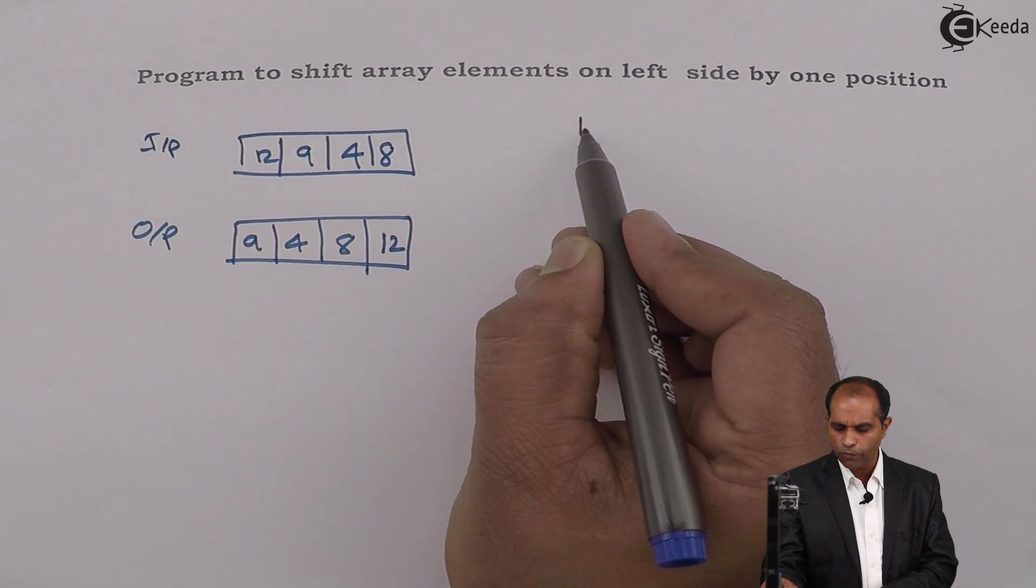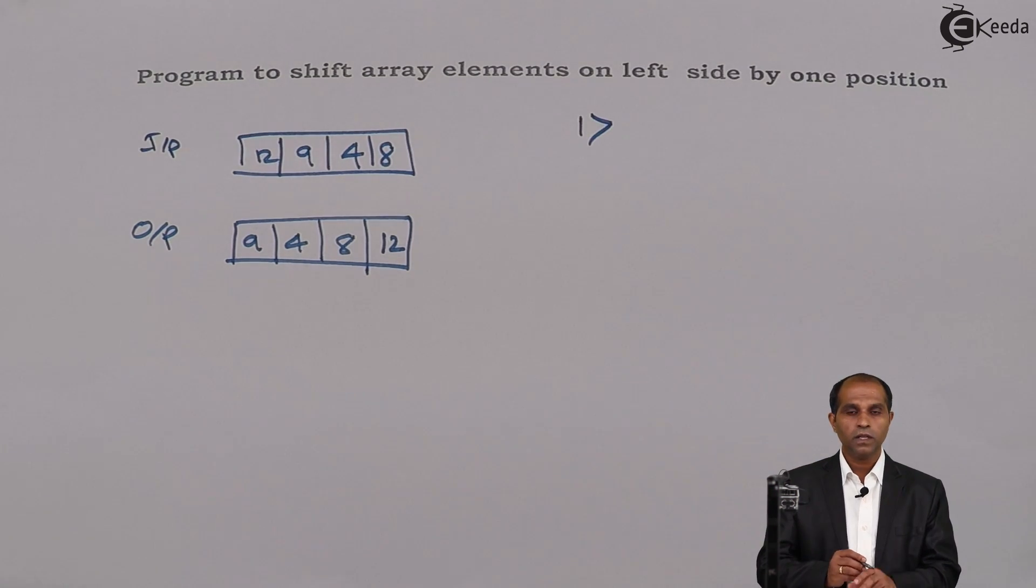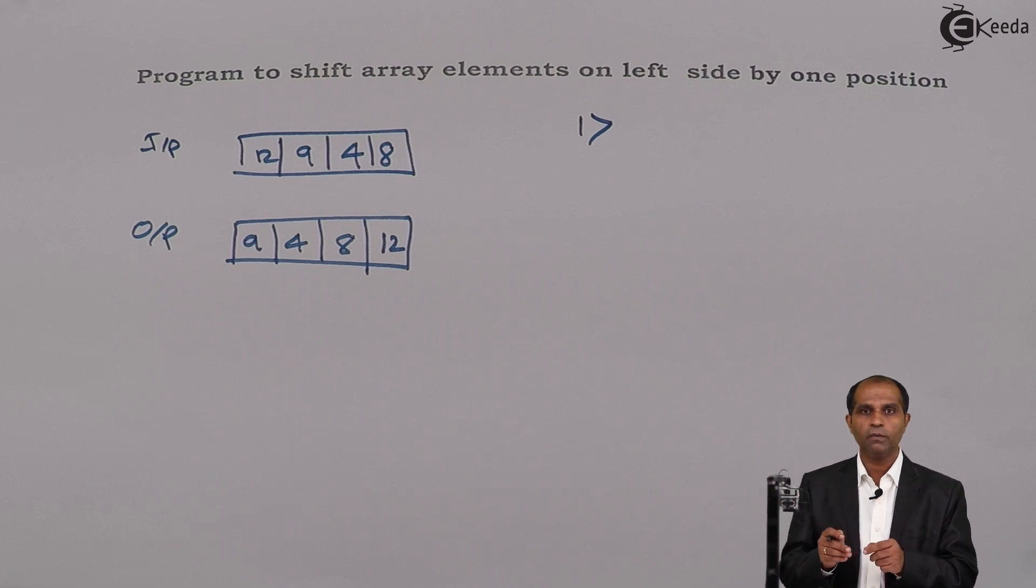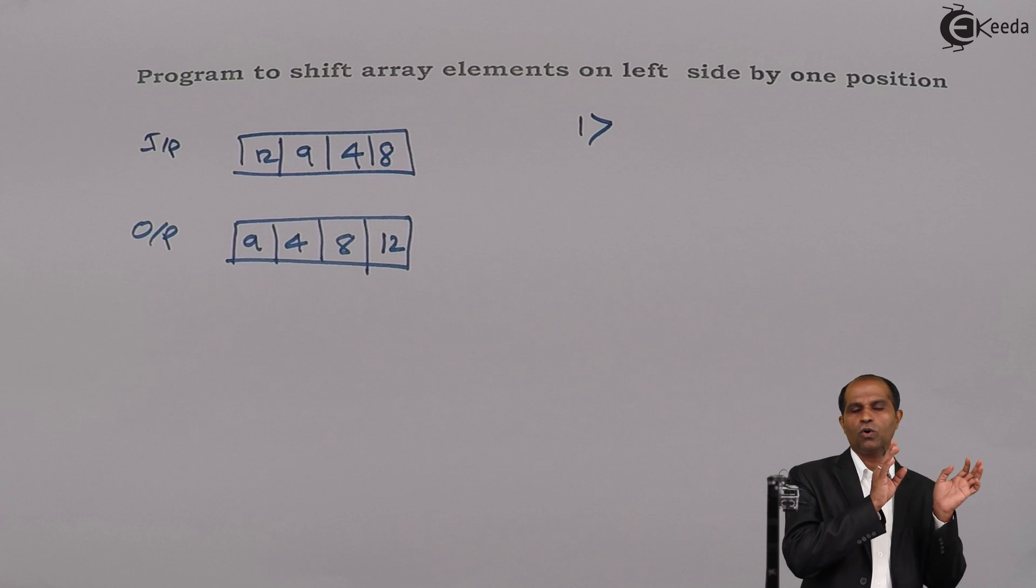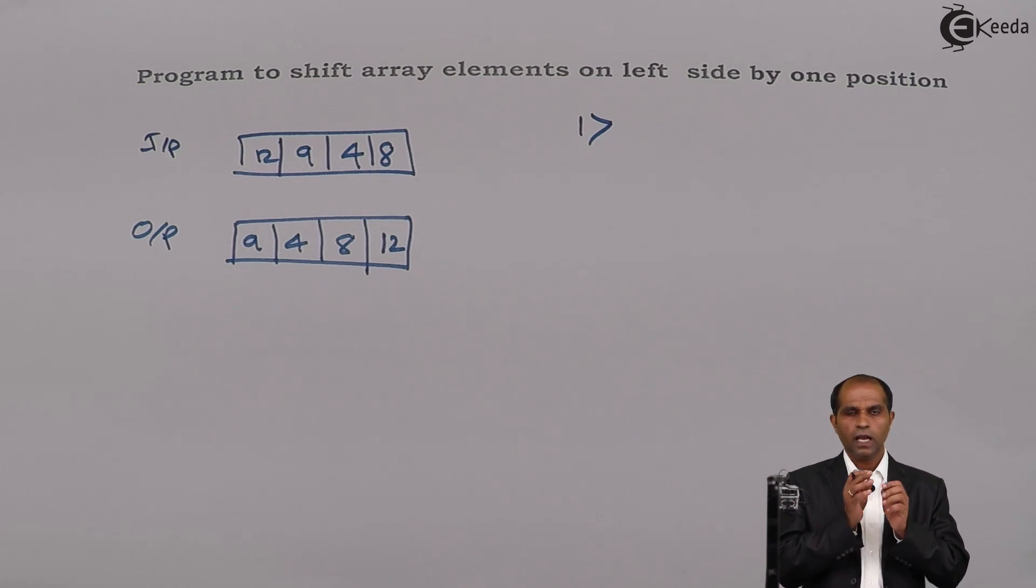So as per that, the very first step is what? Yes, you remember it properly. I have to say that I have to shift the elements towards left-hand side by one position. It means that one element is going to go out.